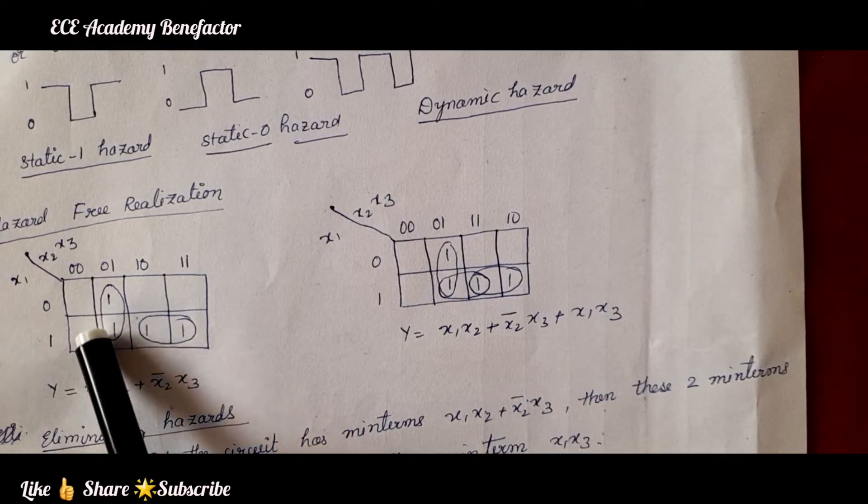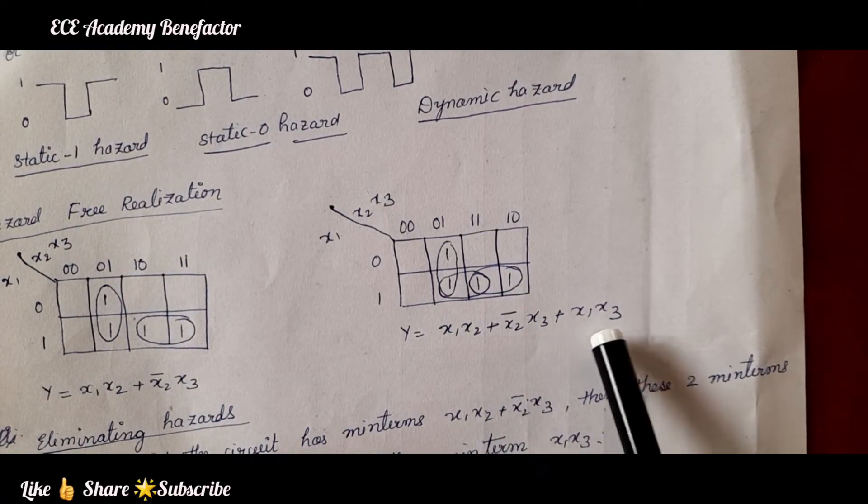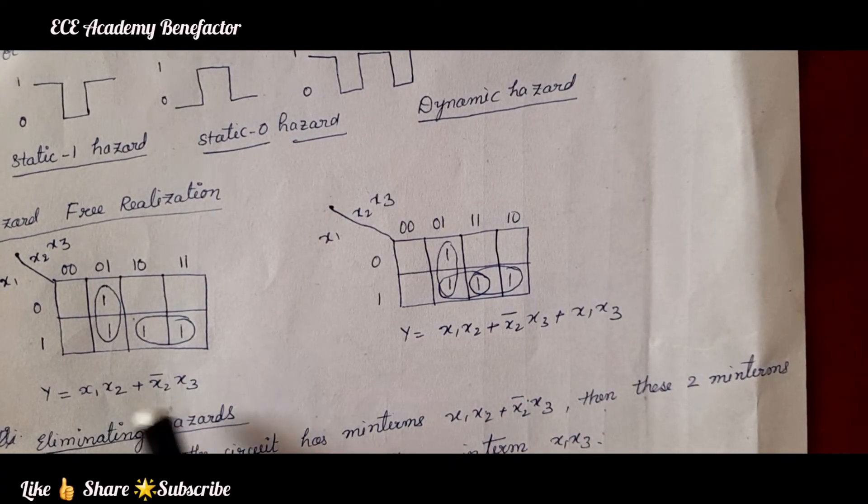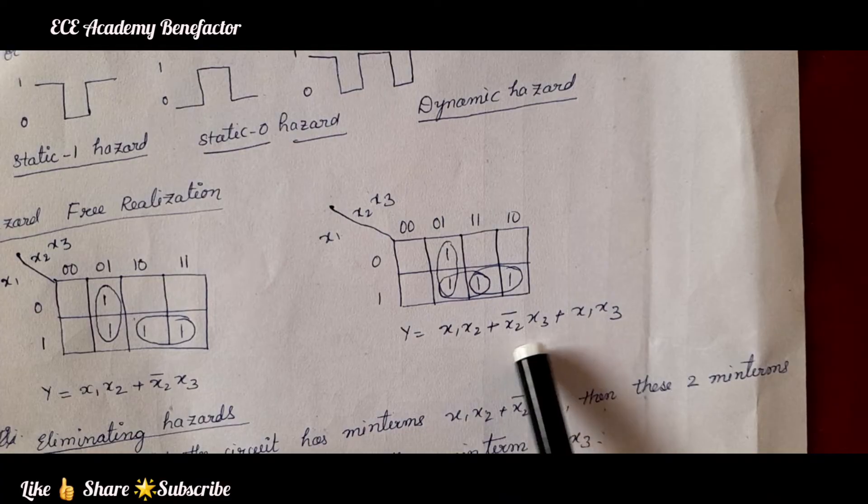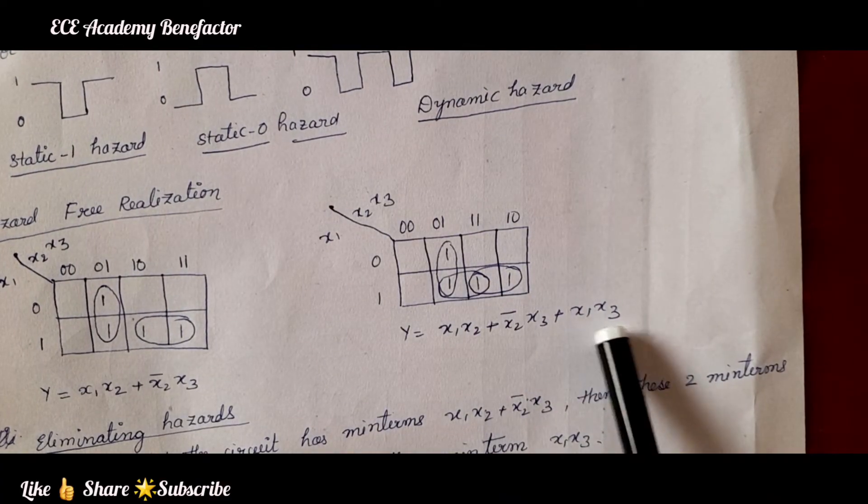So, these two ones if they are enclosed like this, we will get an additional term of x1 x3. We are having these two terms x1 x2, x2 bar x3 along with this by enclosing this we got another term x1 x3.